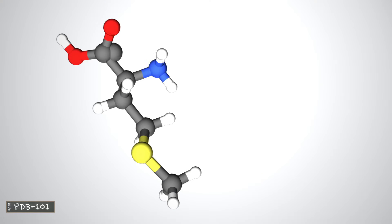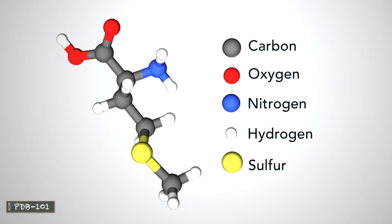Amino acids are made of carbon, oxygen, nitrogen, and hydrogen atoms, and some contain sulfur atoms.